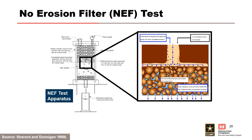The no-erosion filter test was developed by Sherrard and Dunnigan to determine the ratio of D15 of the filter and D85 of the base that establishes a no-erosion condition for non-dispersive base soils. Additional research by Foster and Fell informed the development of the no-erosion condition for dispersive base soils. Particle retention criteria for modern filter design is based on the no-erosion filter concept.